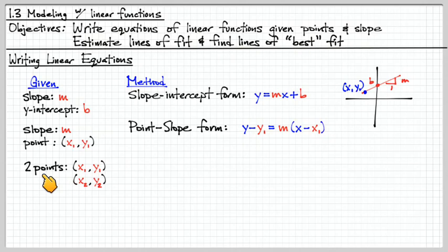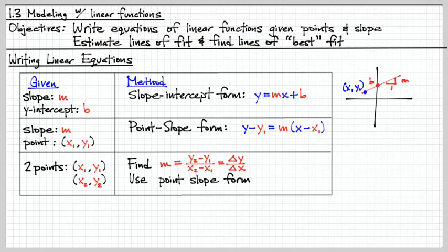The last case is when we have two points. We're not given the slope straight away. And in this case, the method is to just find the slope. Find slope using our slope equation. And I use this notation, delta y over delta x, as a way of saying the change in y divided by the change in x. And after we've found the slope, then we just go back and use the point-slope form using either one of these two points as our values to fill in right here.